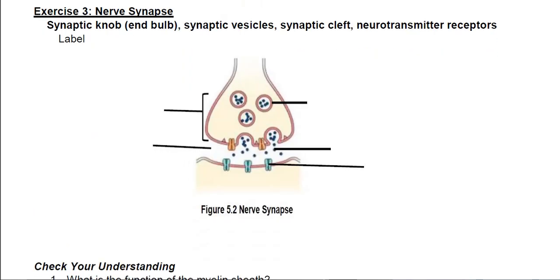Next is a nerve synapse. This is where the axon terminal of one neuron meshes with the dendrite of the next neuron in the sequence. A synapse is the transfer of information from one neuron to another. This here is the axon terminal, and where it gets wider at the very end is called the synaptic knob.